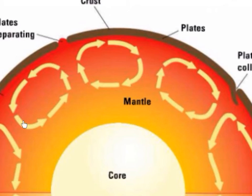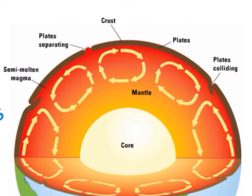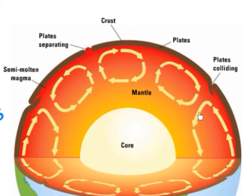The same convection current cycle happens throughout the mantle. Because the plates are floating on top of the mantle, when the convection currents move, the plates also move with them. In some places, plates are separating — the convection current moves right on one side and left on the other, pulling the two plates apart. In other places, plates are colliding — convection currents moving towards each other force the plates together.